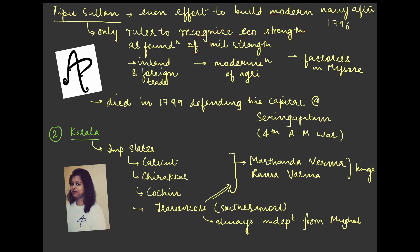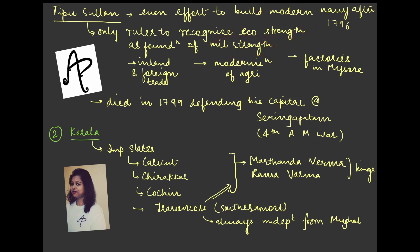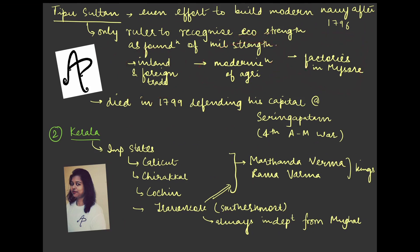Tipu Sultan is considered the only ruler who recognized economic strength as the foundation of military strength. His view was that a strong economy makes it easier to build a strong military. He focused on inland and foreign trade to grow the economy, modernization of agriculture, and helped establish factories in Mysore. Note that these factories were not production units but warehouses or storage facilities — we will discuss factories further when we talk about the British.